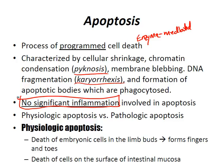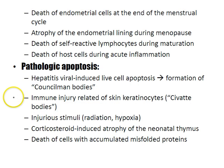Physiologic apoptosis causes include: death of embryonic cells in the limb buds forming fingers and toes; death of cells on the surface of the intestinal mucosa; death of endometrial cells at the end of the menstrual cycle; atrophy of the endometrial lining during menopause; death of self-reacting lymphocytes during maturation; and death of host cells during acute inflammation.